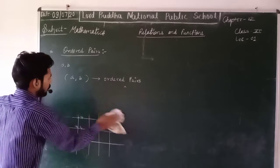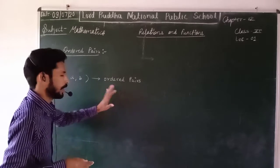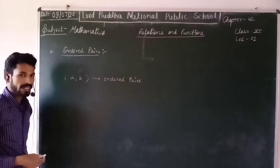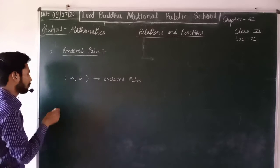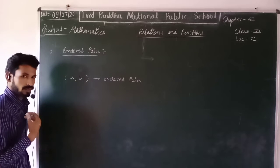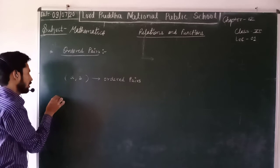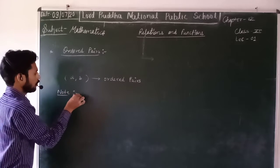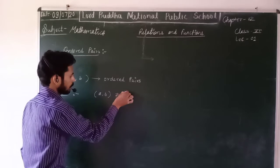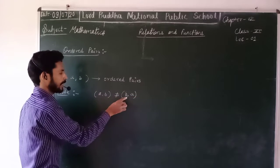Here we have an ordered pair. If we change the order, then the property will change. Always note that the pair of two things A and B is not equal to when we change the order of these things. That means A comma B does not equal B comma A.